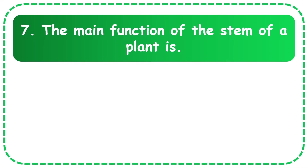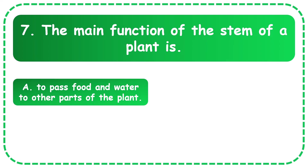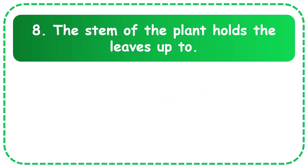Next question: The main function of the stem of a plant is — the options are to pass food and water to other parts of the plant, to make food for other parts of the plant, to absorb water and minerals from the soil, or none of these. The correct answer is to pass food and water to other parts of the plant.